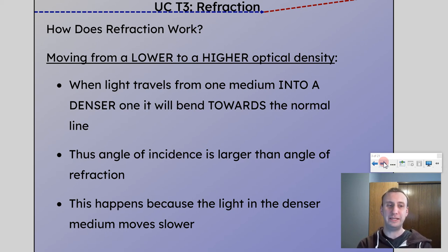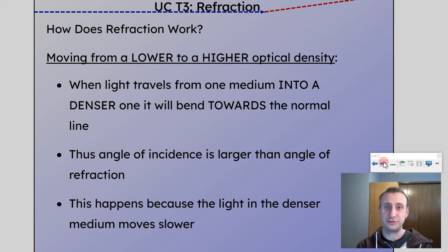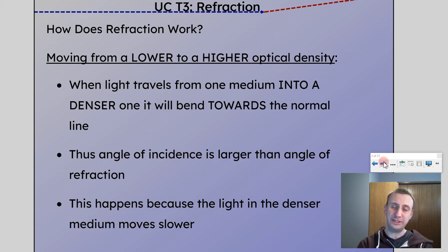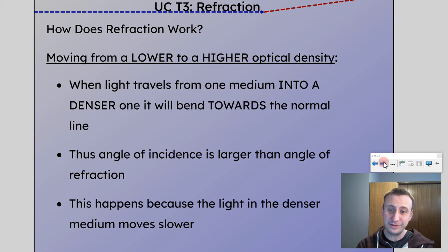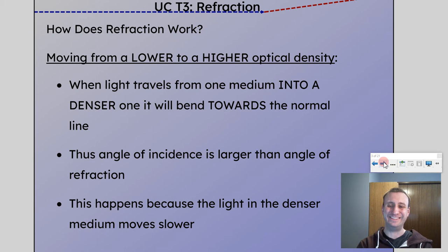When light travels from one medium into a denser one, it will bend towards the normal line. We are still drawing a normal line, just like reflection — and that normal line is perpendicular to the surface of the material it's coming into. If it's going to a denser medium, it's going to end up bending more towards the normal as it travels from the low to the high density medium. Thus, the angle of incidence is larger than the angle of refraction, because the refracted angle is going to be smaller towards the normal. This happens because light in the denser medium moves slower than in the less dense medium.